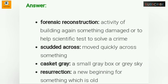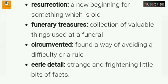Answer: 'Forensic reconstruction' — the activity of rebuilding something damaged to help scientific investigation and solve a crime. 'Skirted across' — moved quickly across something. 'Casket gray' — a small gray box, or a gray sky. 'Resurrection' — a new beginning for something old. 'Funerary treasures' — collection of valuable things used at a funeral. 'Circumvented' — found a way of avoiding a difficulty or a rule. 'Eerie detail' — strange and frightening little bits of facts.